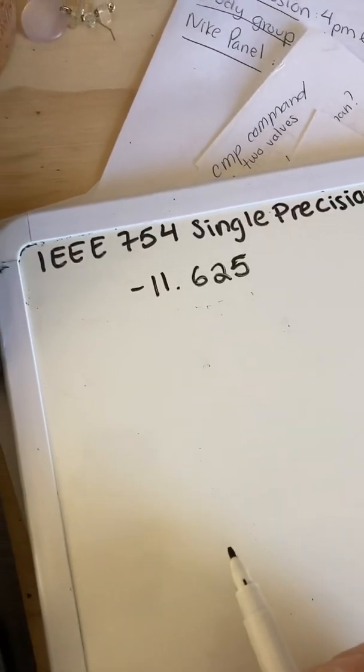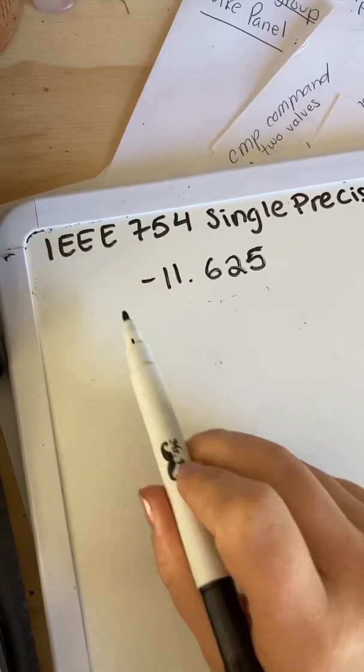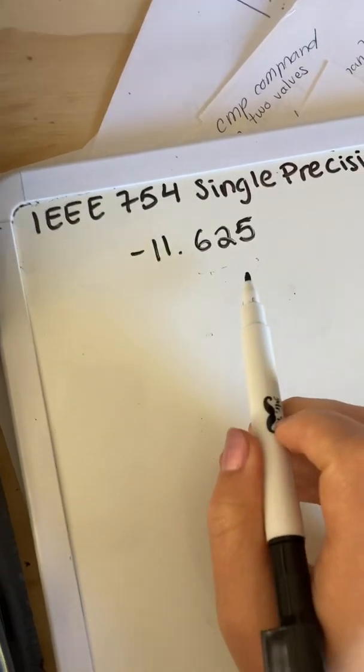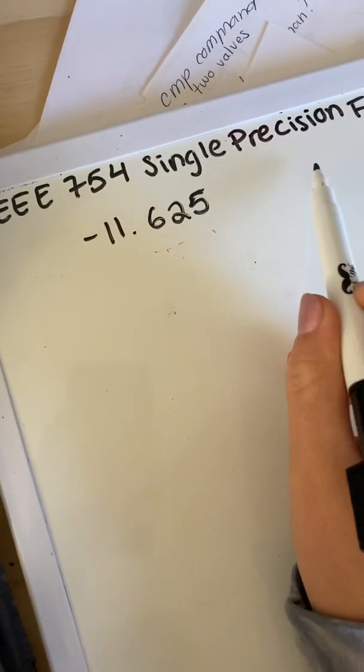Hi everyone! I am going to be showing how to convert a decimal float value into a hex using the IEEE 754 single precision float.